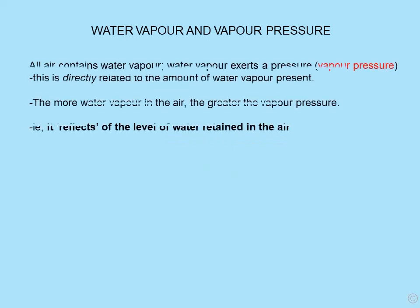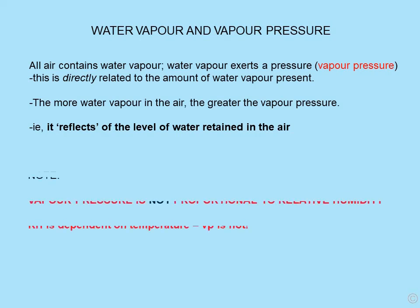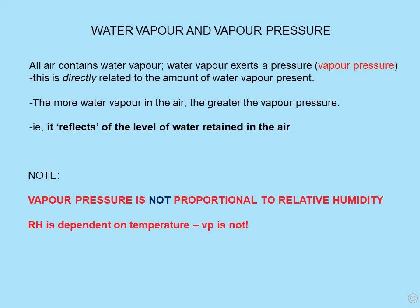Water vapour and vapour pressure. All air contains water vapour and this exerts a pressure — vapour pressure — and that is directly related to the amount of water vapour present. The more water vapour in the air, the greater the vapour pressure. In other words, it reflects the level of water retained in the air. However, it's important to appreciate that vapour pressure is not proportional to relative humidity. Relative humidity is dependent on temperature. Vapour pressure, measured in kilopascals, is not.